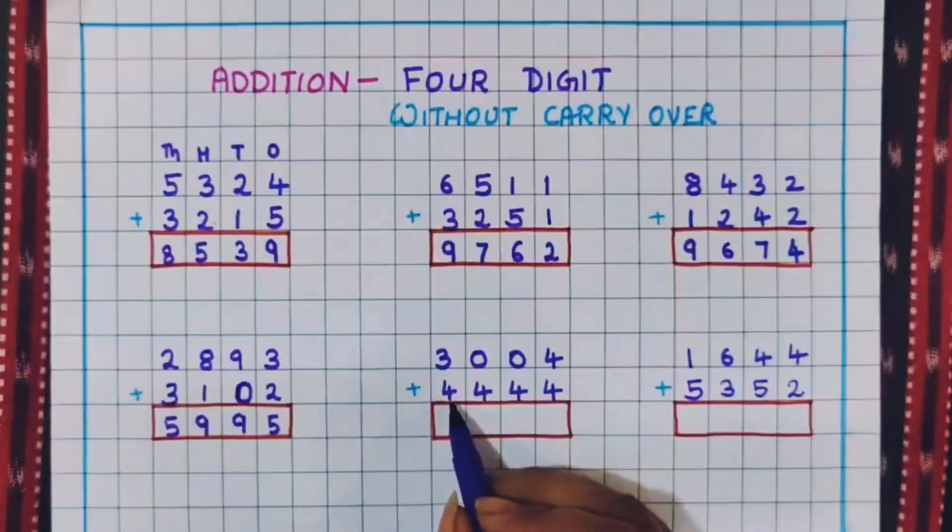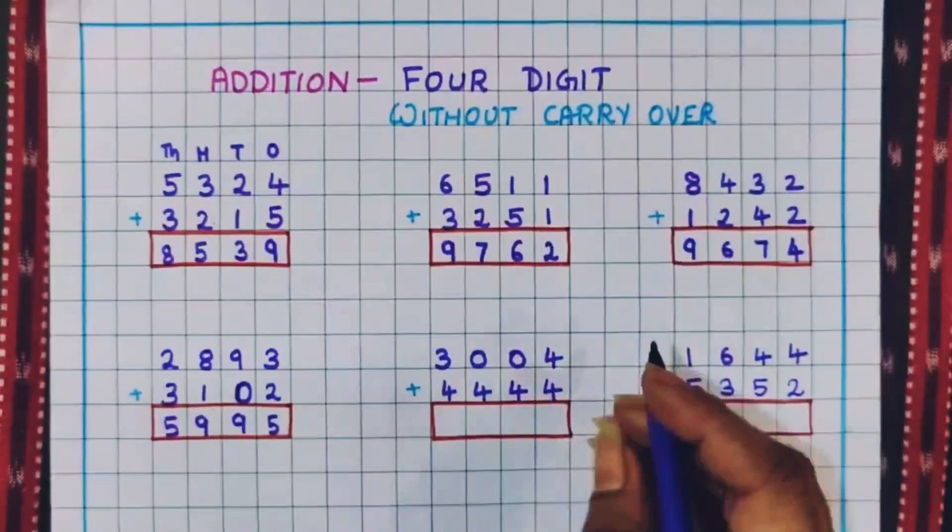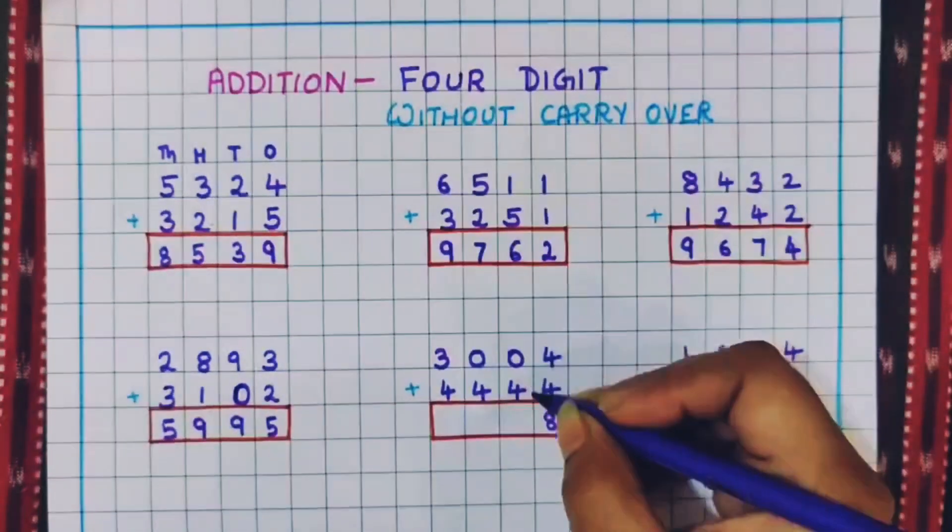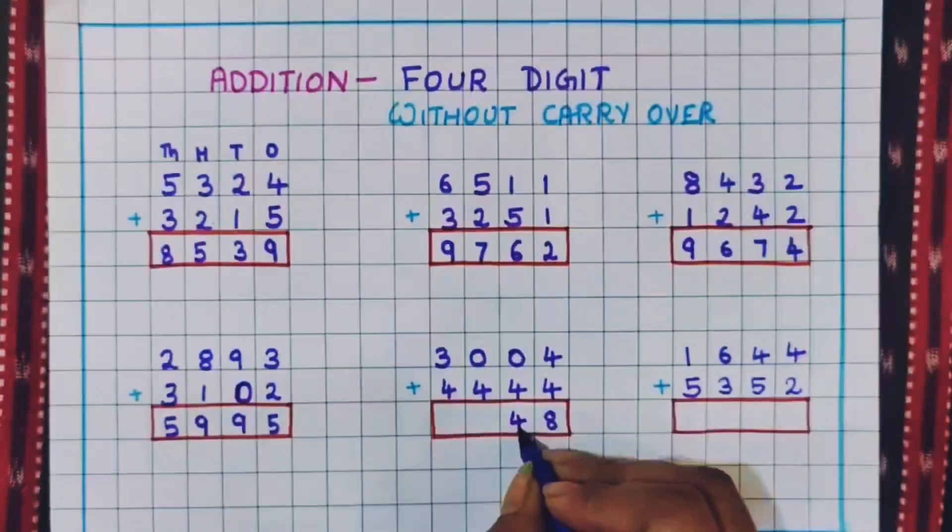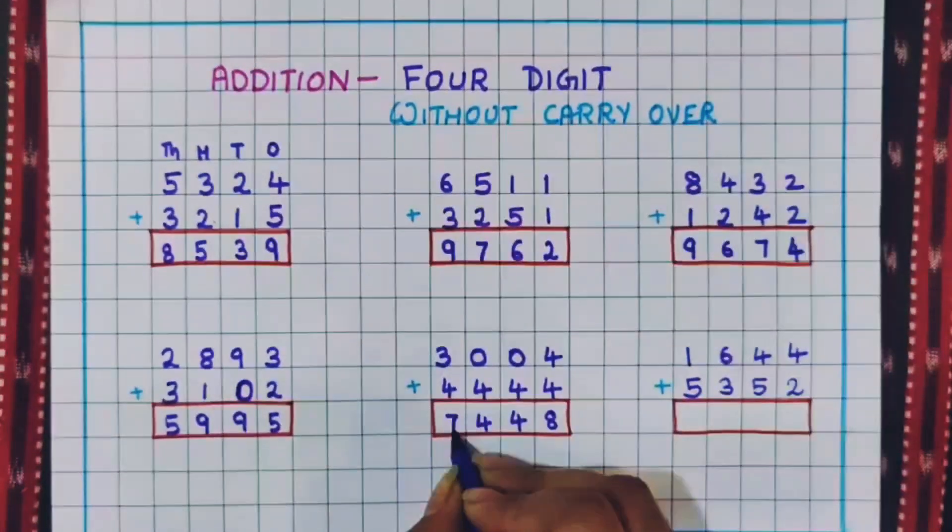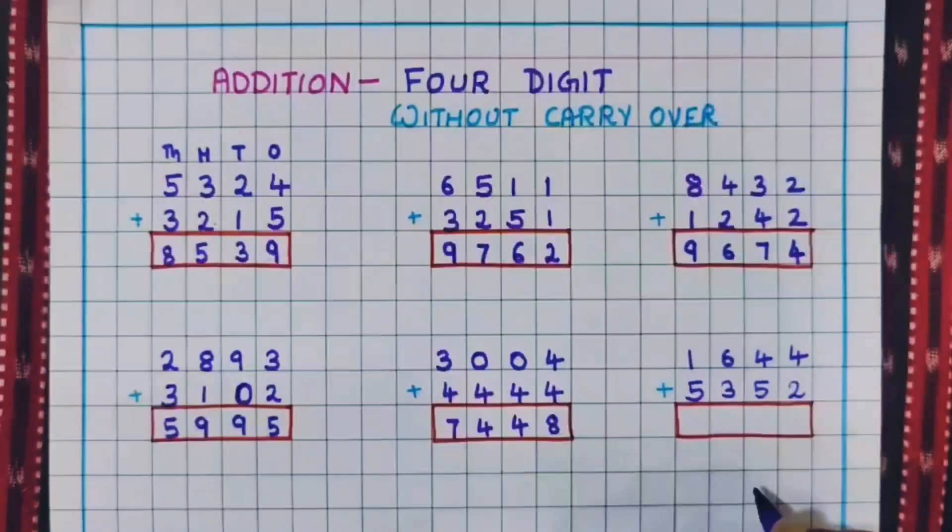3004 plus 4444. So 4 plus 4 is 8. 0 plus 4 is 4. 0 plus 4 again 4. 3 plus 4 is 7.